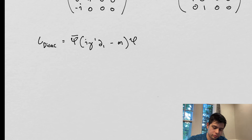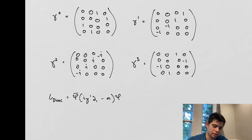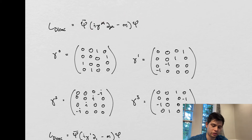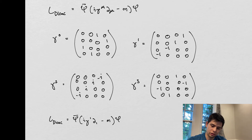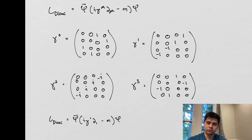So this is the Dirac Lagrangian, and it's embedded in this overall Lagrangian. What we're looking at is actually four Lagrangians, because we have four of these gamma matrices. What's interesting is that some of these have off-diagonal elements — those interesting diagonals — which means there's going to be mixing of different components.